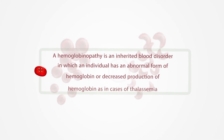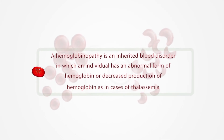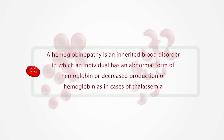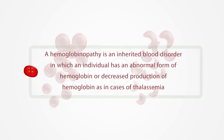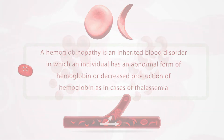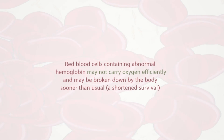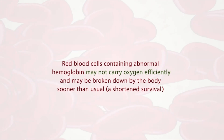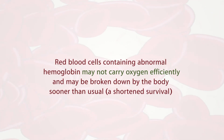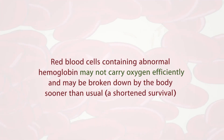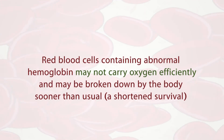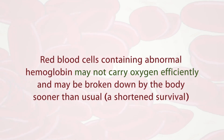has an abnormal form of hemoglobin, or decreased production of hemoglobin as in cases of thalassemia. Red blood cells containing abnormal hemoglobin may not carry oxygen efficiently and may be broken down by the body sooner than usual, resulting in a shortened survival.